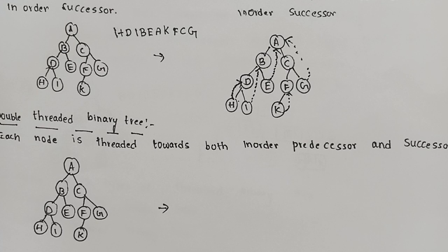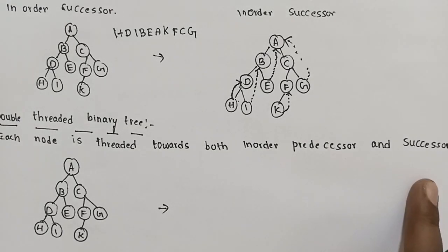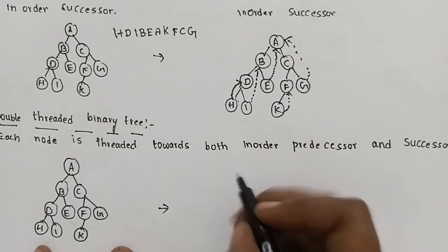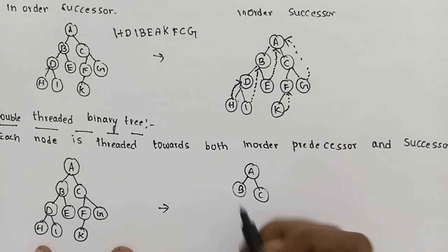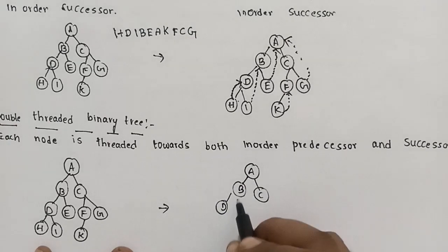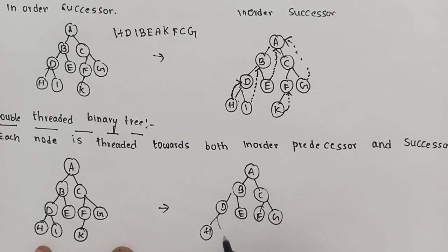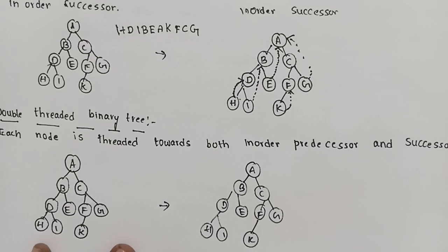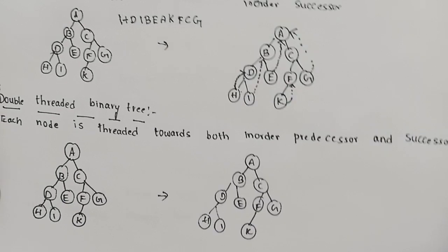Now we have a double-threaded binary tree. When you have a double thread, each node is threaded towards both in-order predecessor and in-order successor. The in-order traversal sequence is: A, B, C, D, E, F, G, H, I, K. In double-threaded, we use both in-order predecessor and successor for each node.